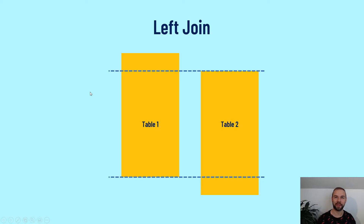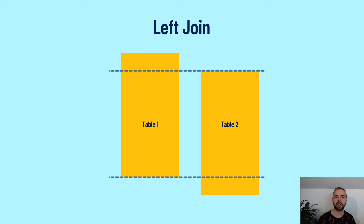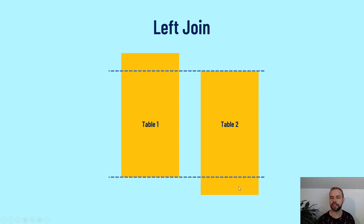Before we dive into using the pandas merge function, I wanted to take a little bit of time to cover the different merge types available. If you've ever used SQL in the past, these will seem quite familiar, but let's get a quick refresher. The first type of join we'll cover is the left join. Here we have two different tables — table one and table two. Table one contains records that table two doesn't, and similarly table two contains records that table one doesn't.